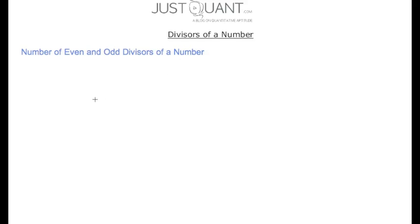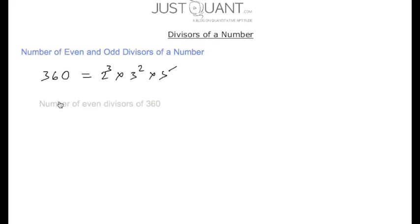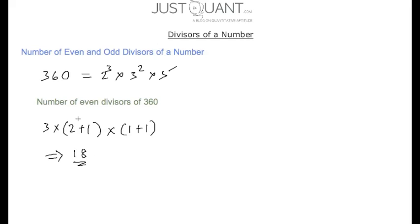Let's now have a look at calculating the number of even and odd divisors of a number. Considering 360 again, this can be written as 2 cubed into 3 squared into 5. Now, the number of even divisors of 360 is given by writing the exponent of 2 as it is and incrementing the exponent of other prime factors by 1. That is, the exponent of 3 is incremented by 1 and the exponent of 5 is incremented by 1, and calculating the product gives us 3 into 3, which is 9 into 2, giving 18 — the number of even divisors of 360.